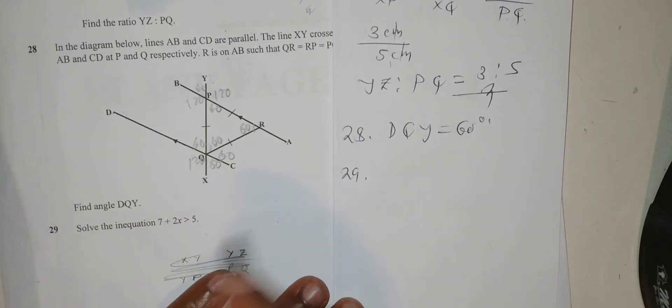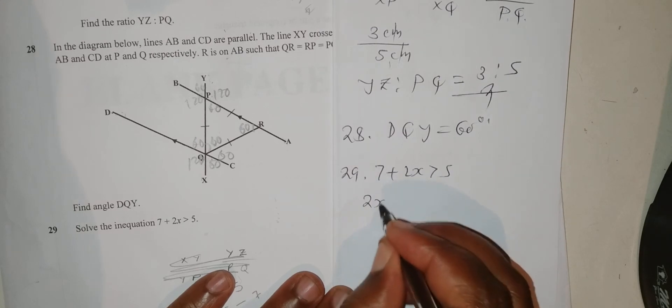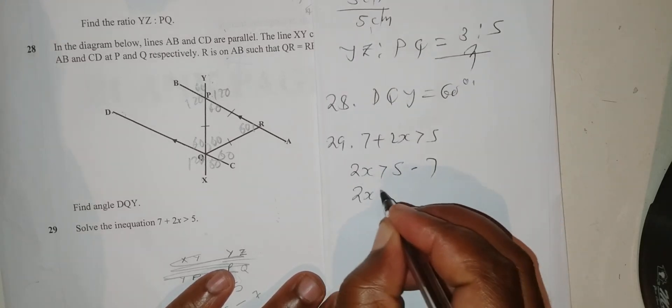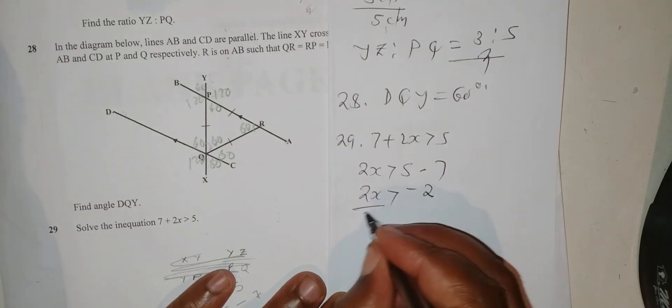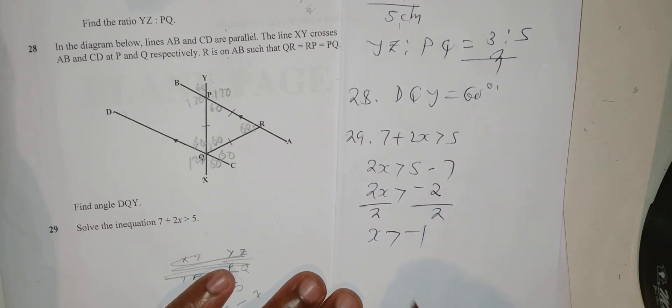Question 29: Solve the inequality 7 plus 2x is greater than 5. 2x is greater than 5 minus 7. 2x is greater than negative 2. Multiply by 1/2, x is greater than negative 1.